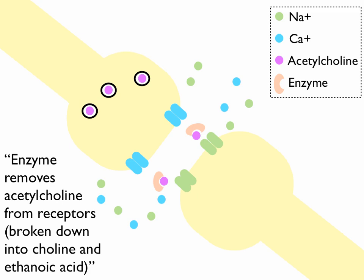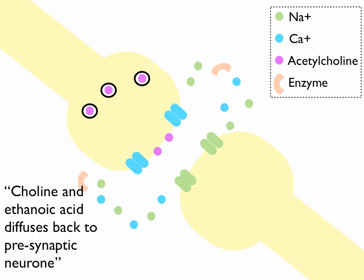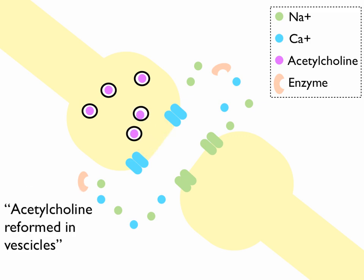Now, that enzyme is going to break down the acetylcholine into choline and ethanoic acid. That's going to be reabsorbed by the presynaptic neuron, or realistically just the choline is reabsorbed. Here we go. That moves by diffusion, by the way. And the acetylcholine is going to be reformed in some new vesicles, ready to start all over again.